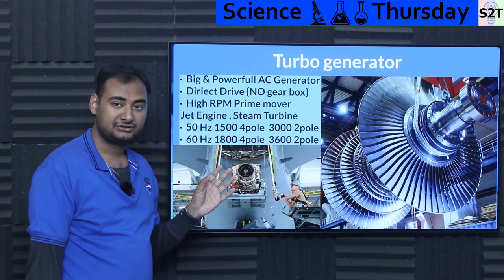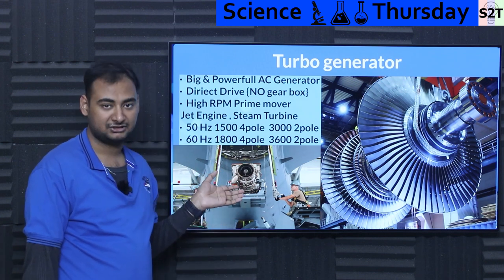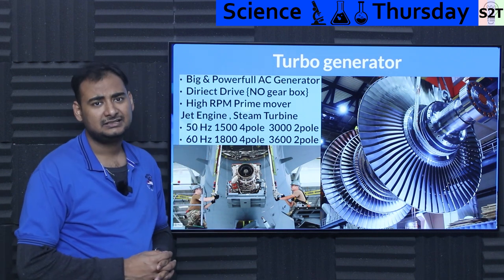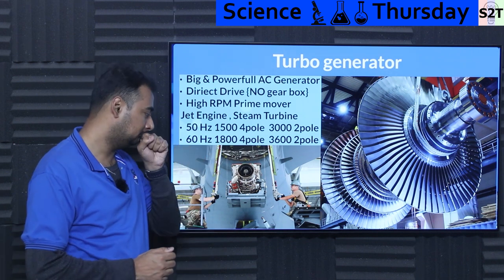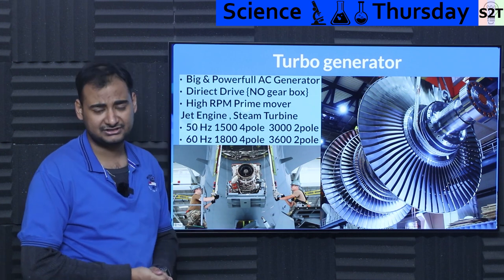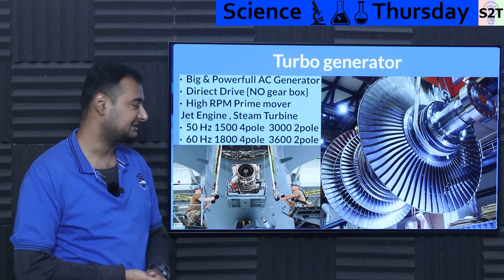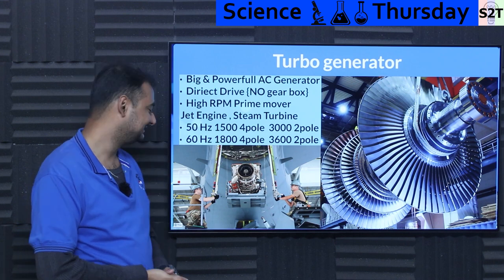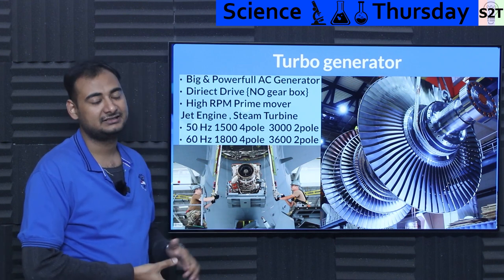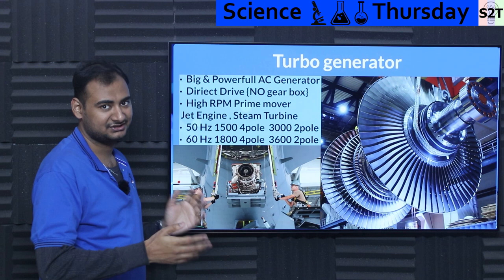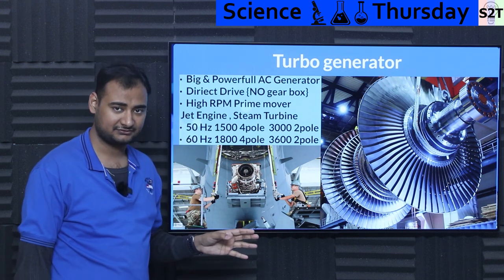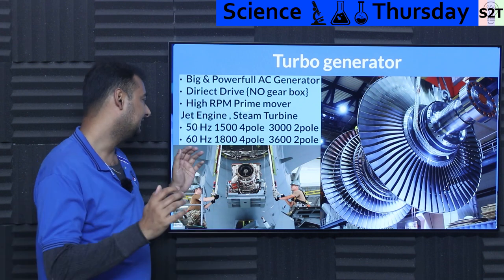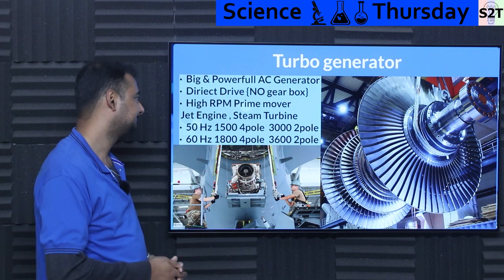In the aircraft industry, jet engines generally drive a turbo generator providing the main electrical power of the aircraft. Jet engines run at much higher RPMs — 3000 RPM is way too low for a jet engine. So aircraft generators generally run at 400 Hz to manage that. A turbo generator is anything that is directly shaft-coupled, generally big, and running at very high RPM.